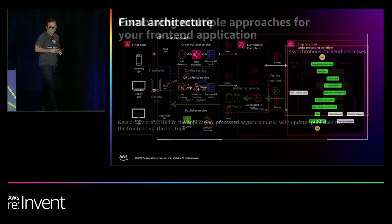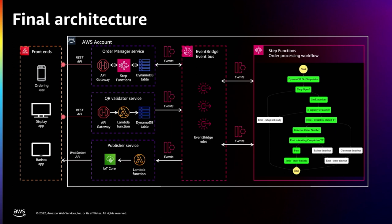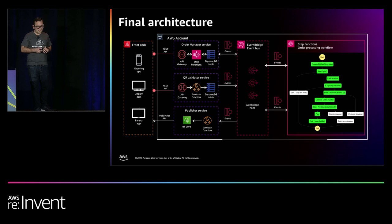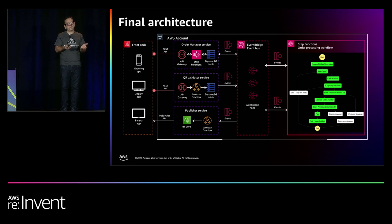The final architecture creates this complete loop: QR scan and orders come in over API requests, processing happens in our Step Functions workflows, and results go back out over the publisher service. EventBridge choreographs all of this using events flowing between components. It's very low code, very flexible, very extensible. There are other microservices not shown here, but they all follow the same model — either they have APIs, or they produce or consume events to be part of the system.